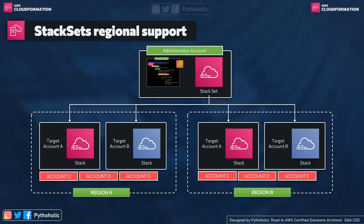For cross-account/region deployment, we need to make use of an administrator account. You can create an administrator user using IAM by granting admin rights to that user. The stack is created by the admin account using ARNs, and we can apply the same stack to target A and target B in region A and region B as well.